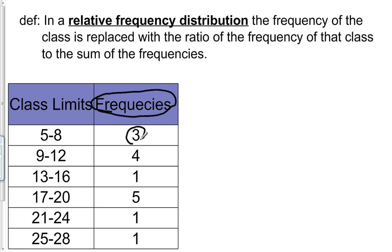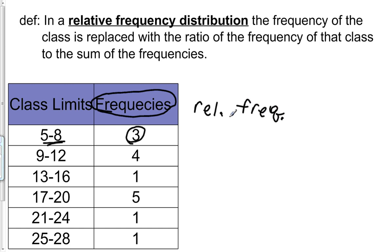For this very first class — the class that goes from 5 to 8 — the frequency of this class is 3. To create a relative frequency distribution, we're going to put the relative frequencies here. The relative frequencies are simply, for each class, the frequency of that particular class — for instance, 3 for this class — divided by the sum of all the frequencies.